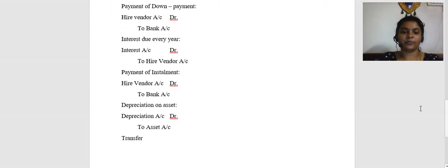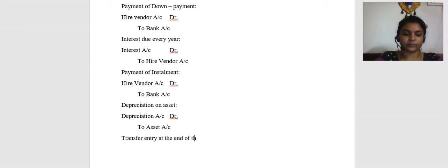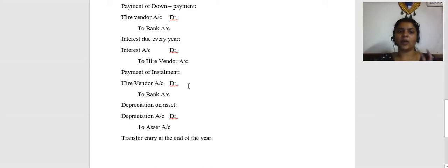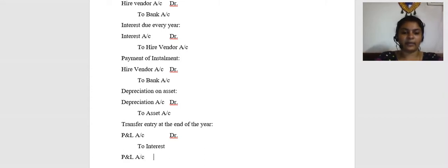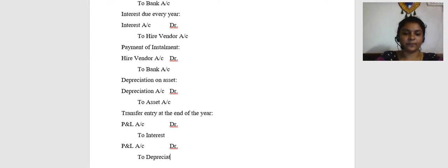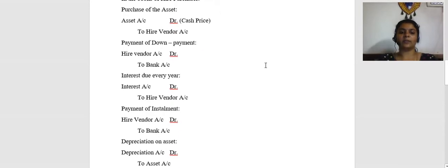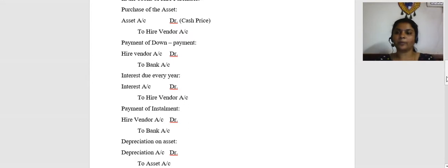The asset is eligible for depreciation. Entry for depreciation: Depreciation Account Dr. to Asset Account. Transfer entries at end of year: P&L Account Dr. to Interest Account; P&L Account Dr. to Depreciation Account. These are a quick summary of the entries in the books of the hire purchaser. If you remember these entries, they are more than enough to prepare the ledger account.